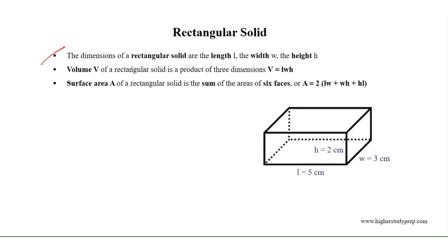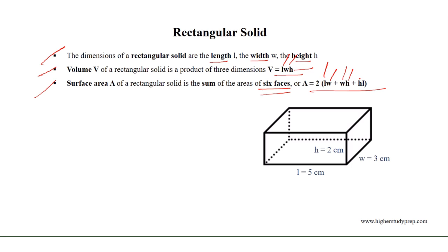The dimensions of a rectangular solid are length, width, and height. So the volume of a rectangular solid is the product of the three dimensions. Therefore, the volume equals length times width times height. And the surface area of a rectangular solid is the sum of the six rectangular faces, which results in two times (length times width, plus width times height, plus height times length).